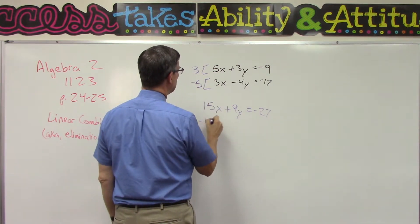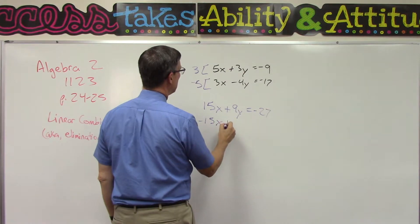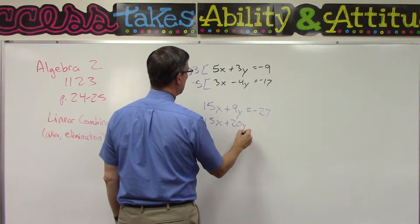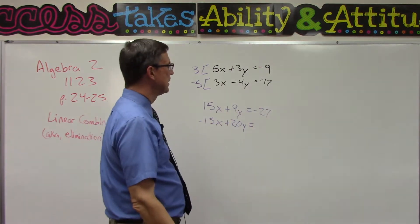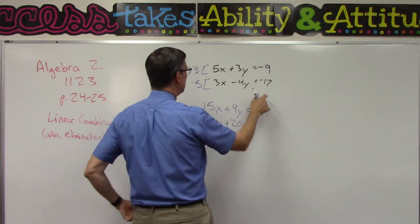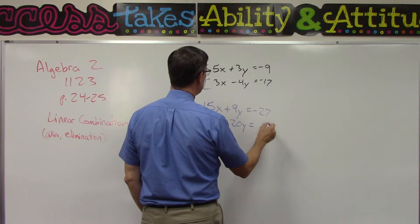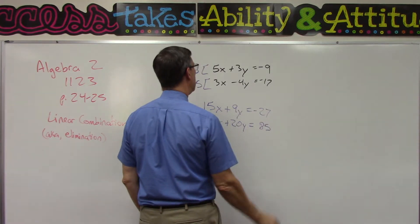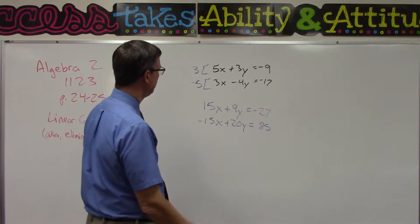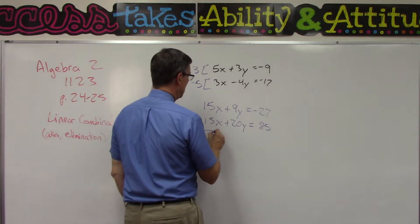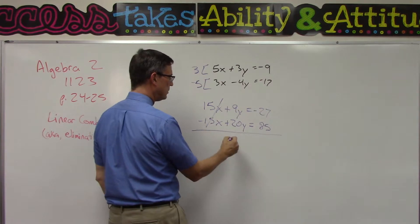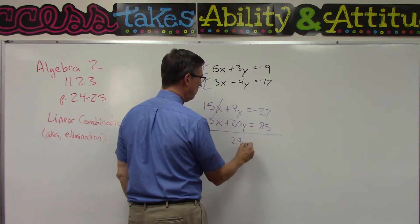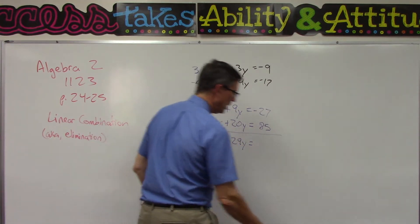Then this becomes -15x + 20y. Negative 10 is going to make the answer positive over here, and this is going to be 85. Now when I add these, notice this cancels out, and I get 29y.